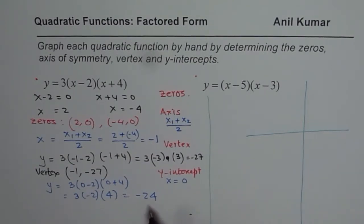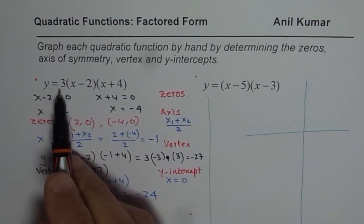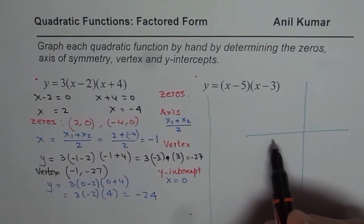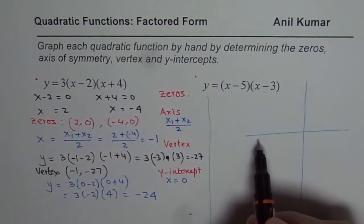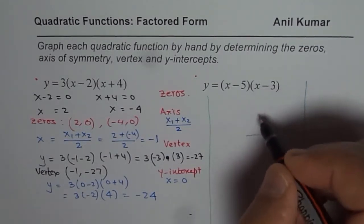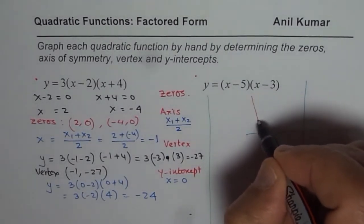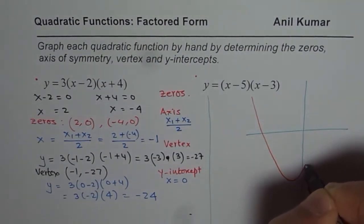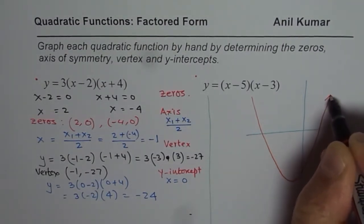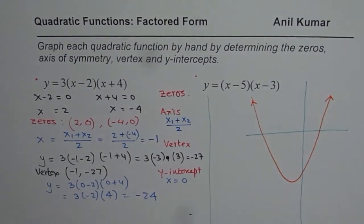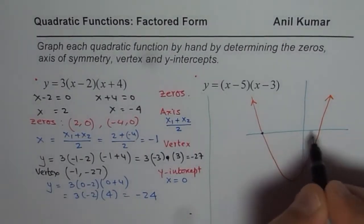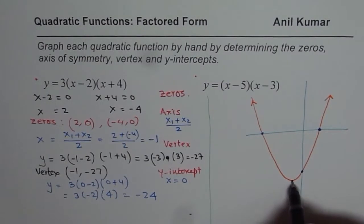The parabola opens upwards since this is a positive value. It has two zeros at minus 4 and 2, and the vertex here. Let me just sketch the parabola like this. On graph paper, what you need to do is label it properly and then sketch. I am following a reverse process which is not quite right but gives you an idea of how to do it.